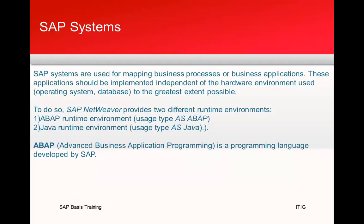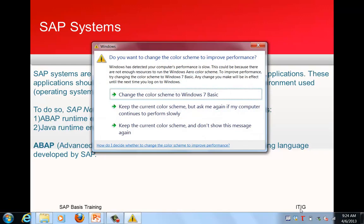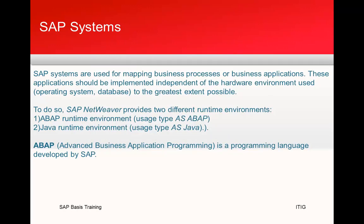SAP systems are used for mapping business processes of business applications. These applications should be implemented independent of the hardware environment — that is, operating system and database — to the greatest extent possible. Whether you have a Windows, Linux, Unix on IBM, or Sun Solaris environment, from the SAP perspective it doesn't change much. People managing this environment find very little difference once inside the SAP interface, though differences appear at the DB tools or OS tools level.